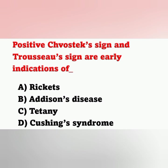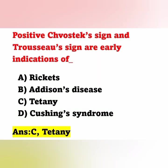Next question: positive Chvostek sign and Trousseau sign are early indications of — Option A: rickets. Option B: Addison's disease. Option C: tetany. Option D: Cushing syndrome. Chvostek sign is elicited by tapping in front of the ear, causing contraction of the facial muscles. Trousseau sign is elicited by inflating the blood pressure cuff at the antecubital fossa, producing carpal spasm in the fingers.